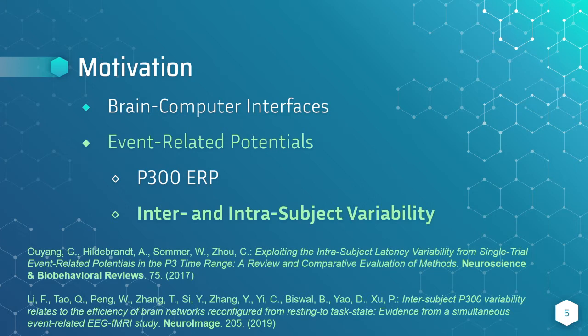The stimulus itself can also affect the response, and there is also a large variability between different users. We call inter-variability to these differences between users, and intra-variability to the variability within the same user. The intra-variability is not only about the timing of the ERP, but also about the different electrodes in the EEG. At different times of the trial, the brain response can appear at different electrodes.